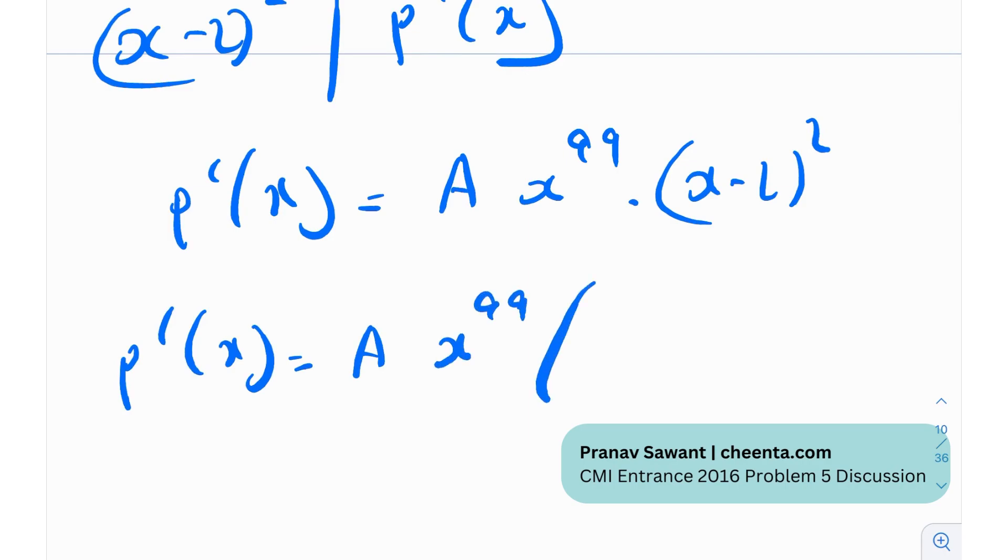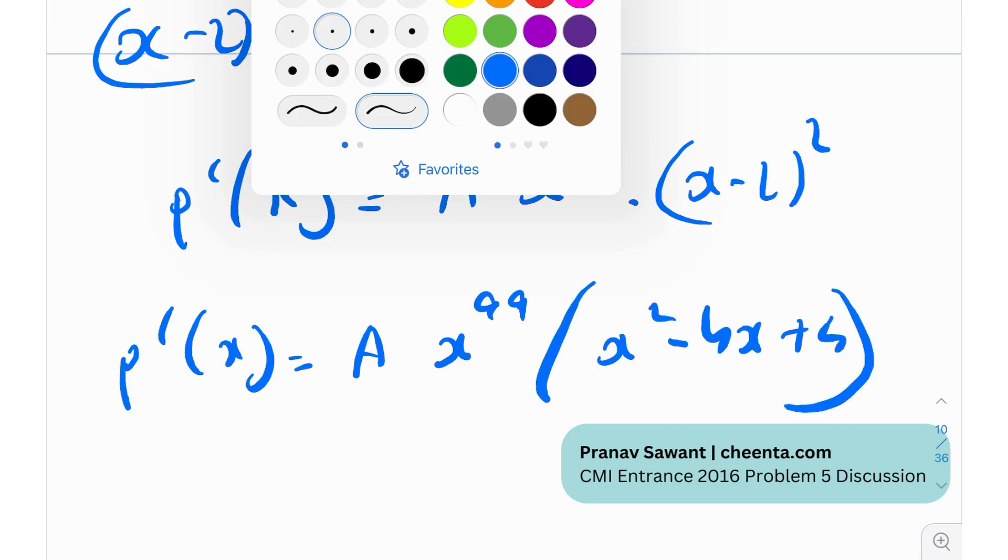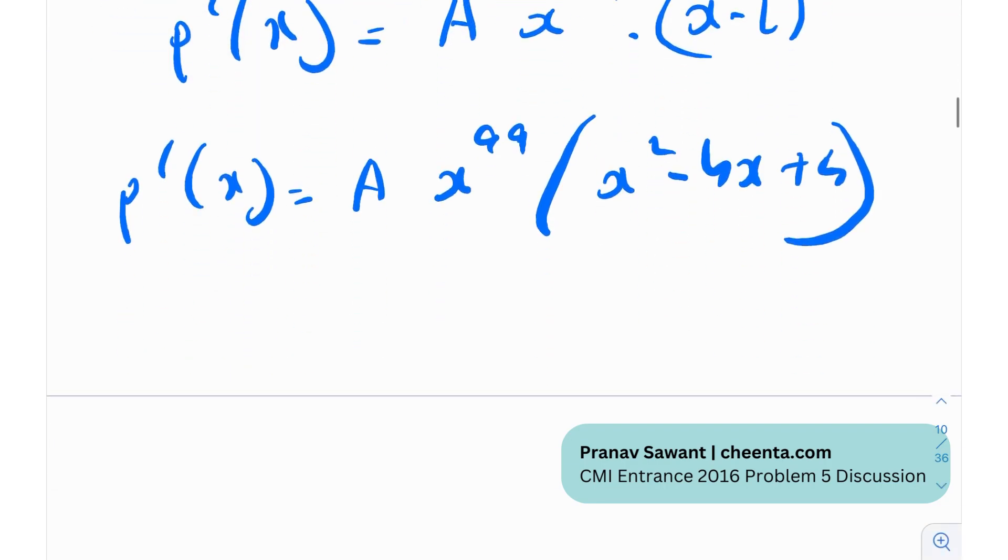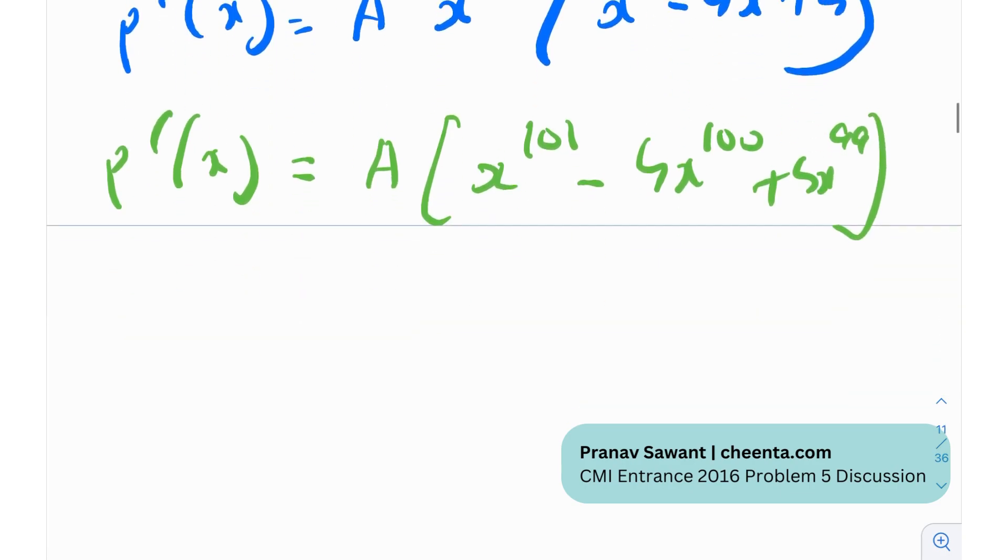So I can write p prime x as a times x to the 99 (x squared minus 4x plus 4) and let me just proceed with a little bit of simplification p prime x is a x to the 101 minus 4 x to the 100 plus 4 x to the 99.